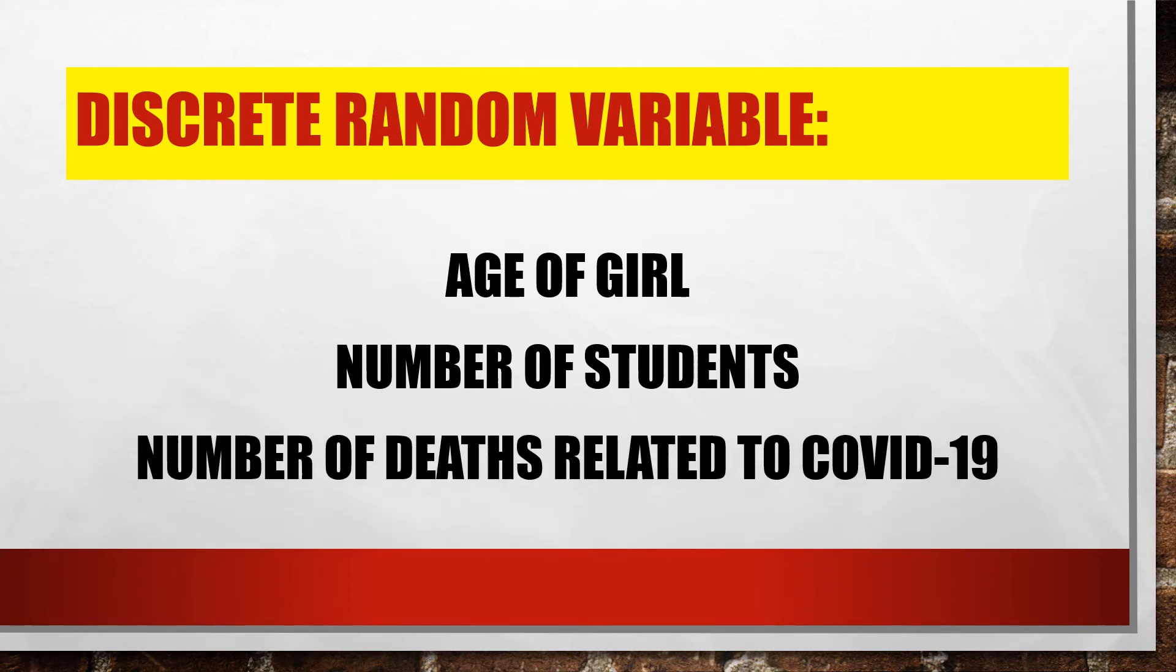And also, number of deaths related to COVID-19. So, ilan na ba ang namamatay as of now? Syempre, meron tayong exact number. Hindi naman pwedeng 8,500.5 dahil wala namang kalahating tao. Nagkukuha nyo ba yung concept ng discrete random variable? Ang mga numbers ay eksakto. Walang sobra. Walang labis.